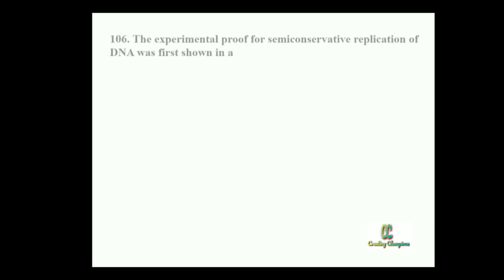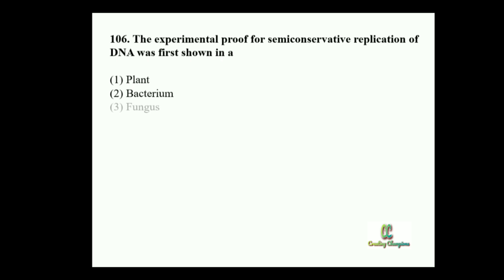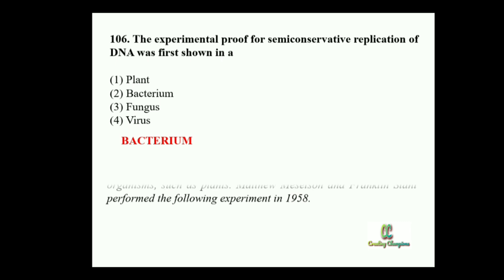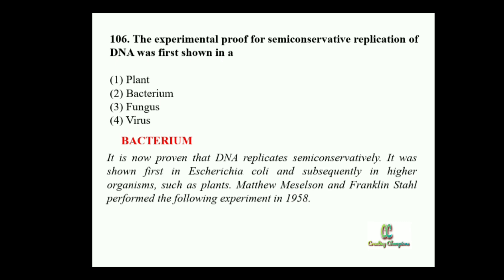Next question: The experimental proof for semi-conservative replication of DNA was first shown in which organism? Option 1: Plant. Option 2: Bacterium. Option 3: Fungus. Option 4: Virus. The answer is bacterium, because it was proven that DNA replicates semi-conservatively and it was first shown in Escherichia coli and subsequently in higher organisms such as plants. Matthew Meselson and Franklin Stahl performed this experiment in 1958.